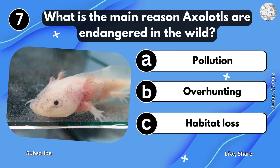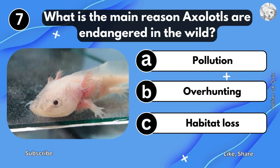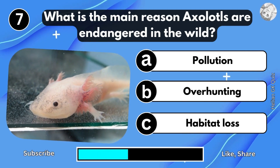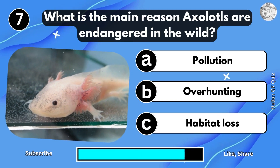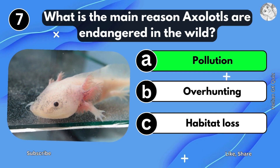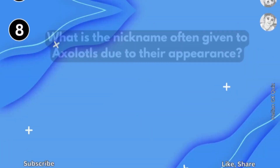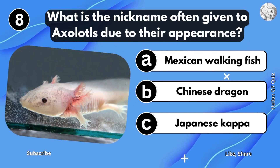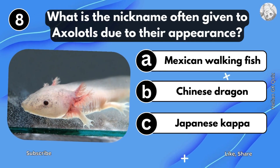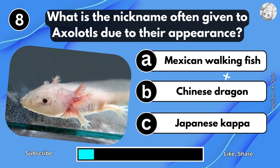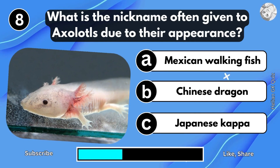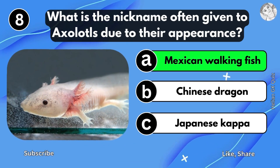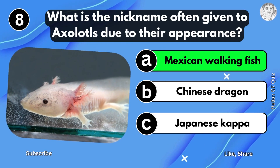What is the main reason axolotls are endangered in the wild? Pollution. What is the nickname often given to axolotls due to their appearance? Mexican walking fish.